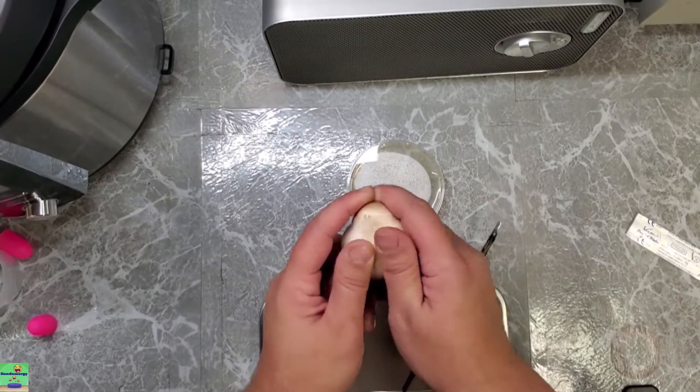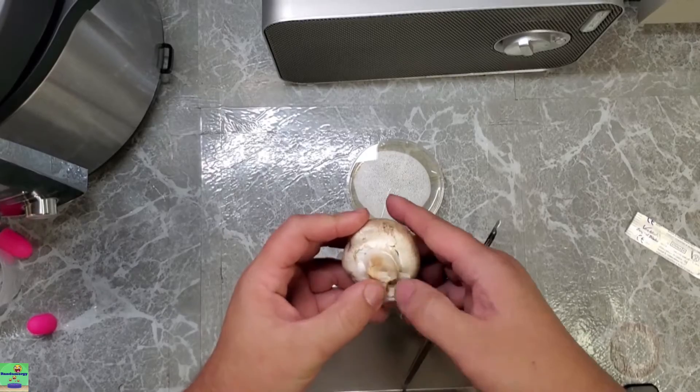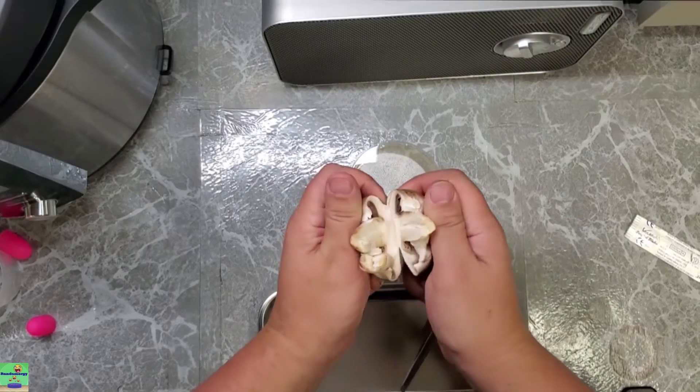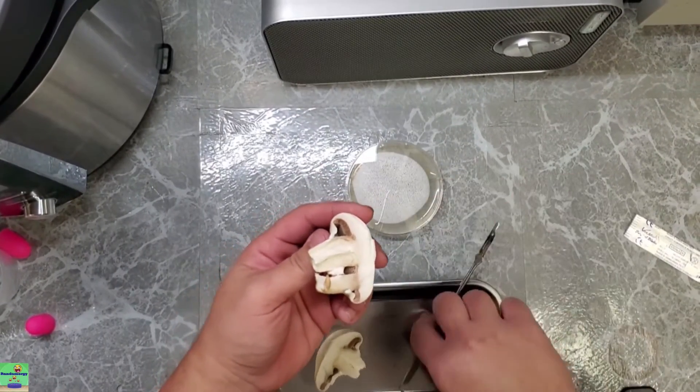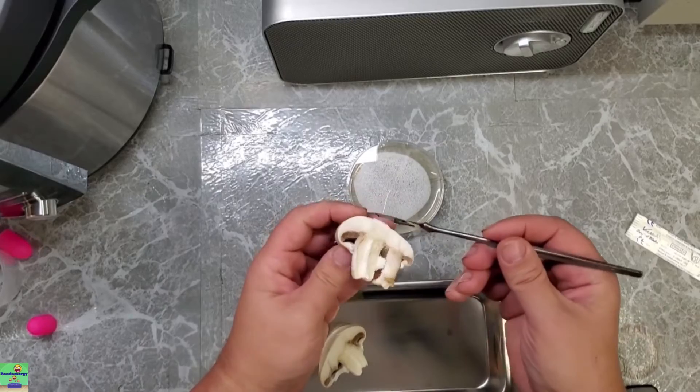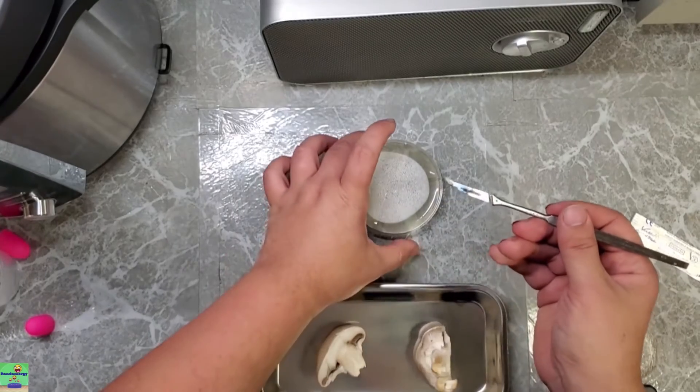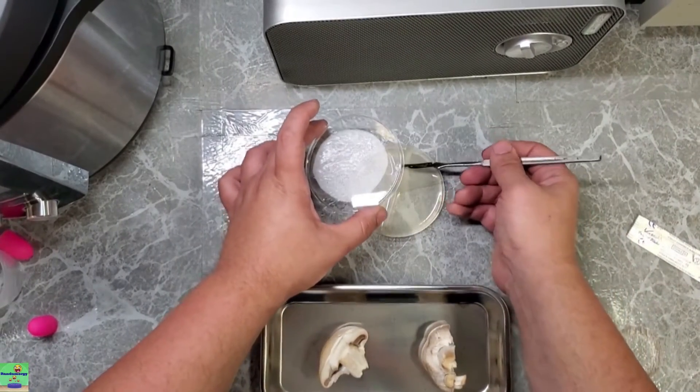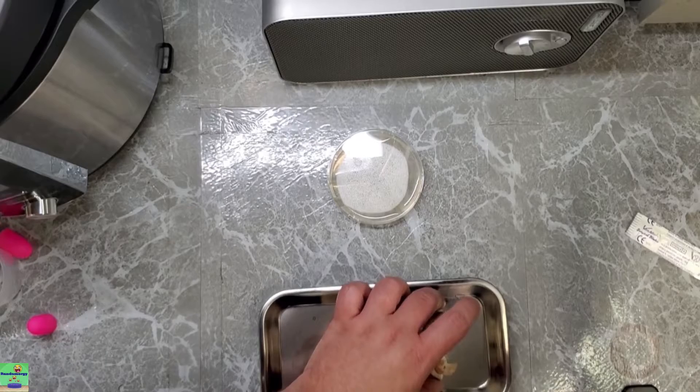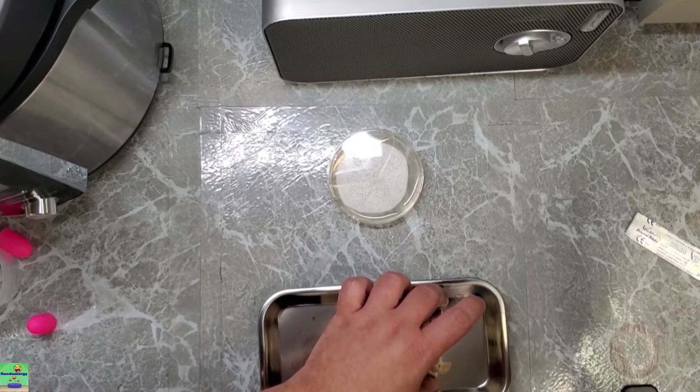Whenever you clone a mushroom, you don't want to cut - you always want to get something from the middle because your chances of contamination are lowest there. So break it, don't cut it, and that way you're not pushing contaminants down into the middle of the mushroom itself. Then you take just a small little chunk of the mushroom flesh and place it on the agar.